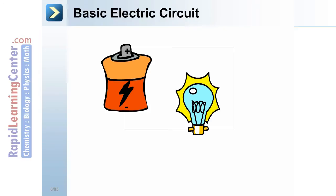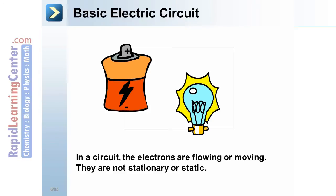Basic electric circuit. Note the diagram pictured here. In a circuit, the electrons are flowing or moving. They are not stationary or static. Note how the electron repeats the same path or circuit.